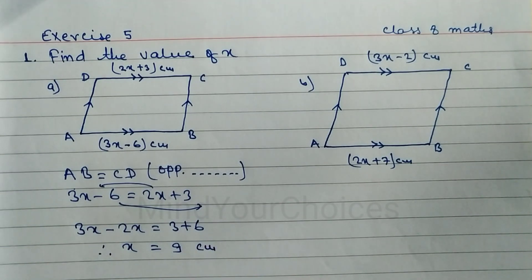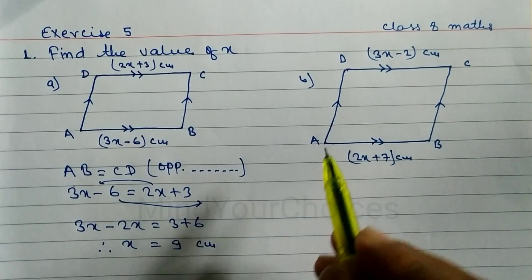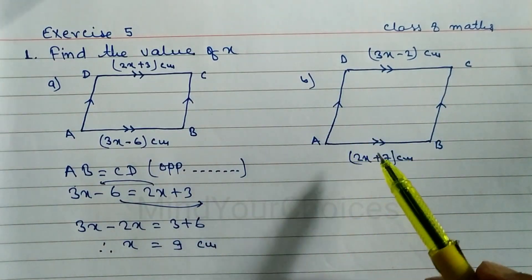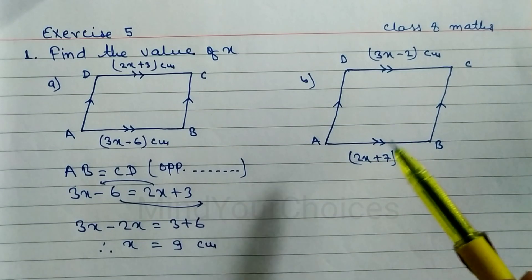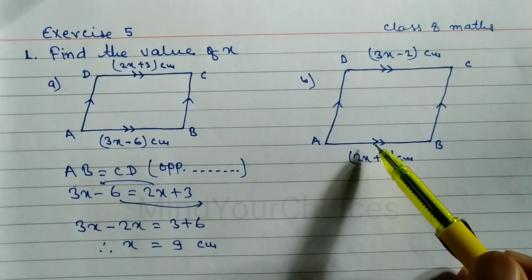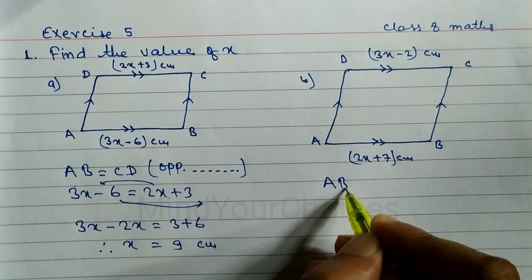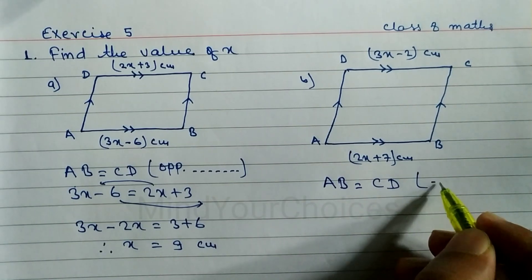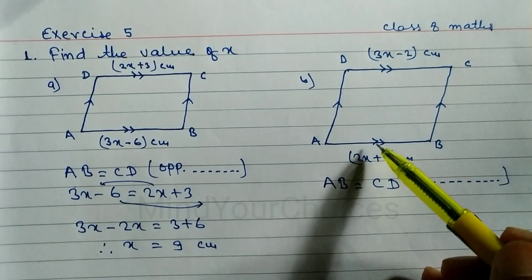Now look at question number b. You can see here ABCD is a parallelogram. A parallelogram means opposite sides are equal and opposite angles are equal, but here only the side lengths are given. So we can write AB is equal to CD. Reason: opposite sides of a parallelogram are equal.